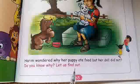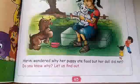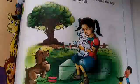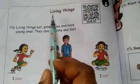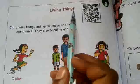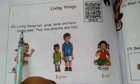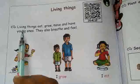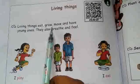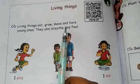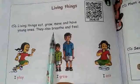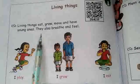How do we know living and non-living things? How do we know living things? Listen and watch the reading. Living things eat, grow, move and have young ones. They also breathe and feel.